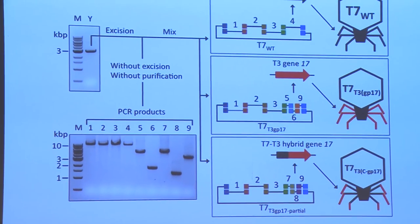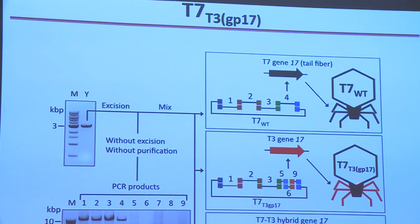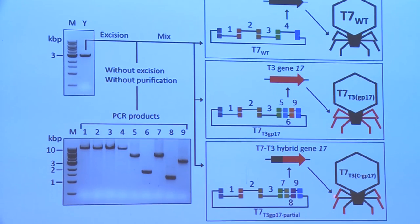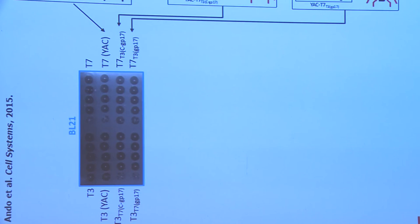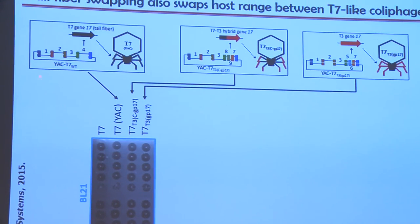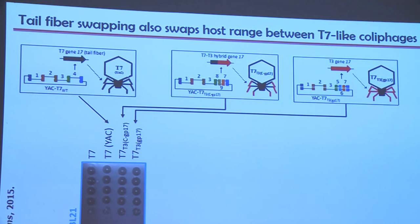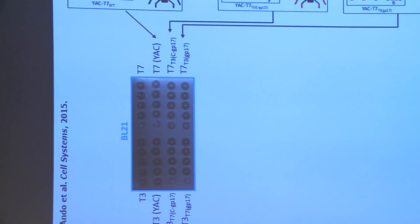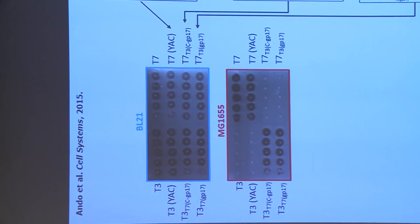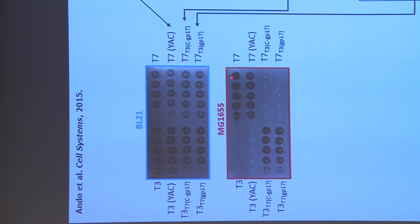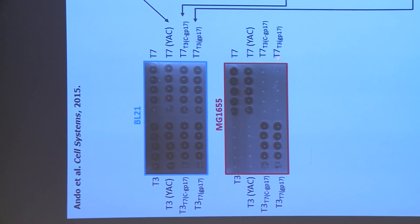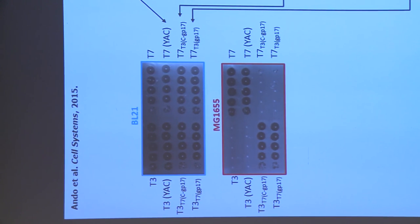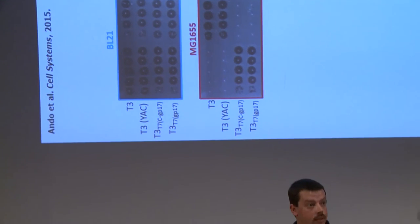We built from T7: a T7 carrying the T3 tail fiber, and a T7 carrying just the C-terminal part of the T3 tail fiber. We had no idea if the T3 tail fiber alone could bind the T7 capsid. Testing these phages against selective hosts, we see that while T7 grows on MG1655, the reconstructed T7 has exactly the same phenotype, but the T7 with the T3 tail fiber no longer grows on MG1655. And conversely for the T3 mutants. So the idea works: changing the tail fiber genes changes host range.